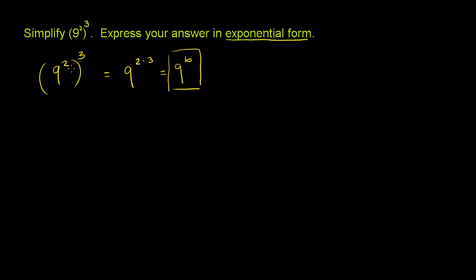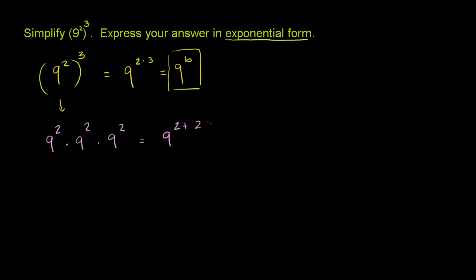Another way to view it, if you don't like that formula, is to think of 9 squared to the third power as 9 squared times 9 squared times 9 squared. We also know the other exponent property: if you have the same base being raised to the same power and you're taking the product of them, this is the same thing as taking that base — 9 — and raising it to the sum of the powers. So 9 to the 2 plus 2 plus 2, which is once again 9 to the 6th.